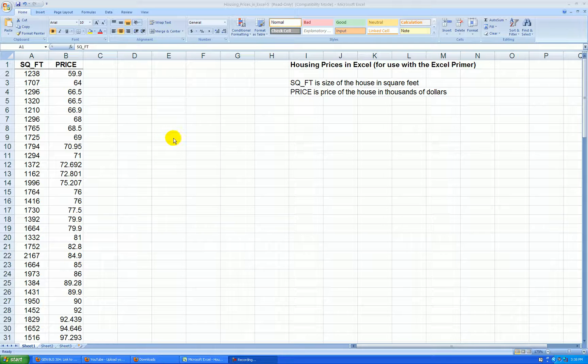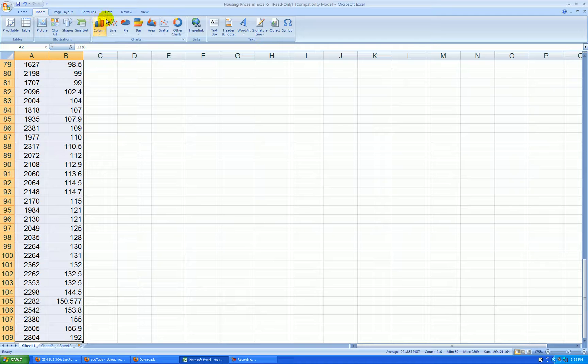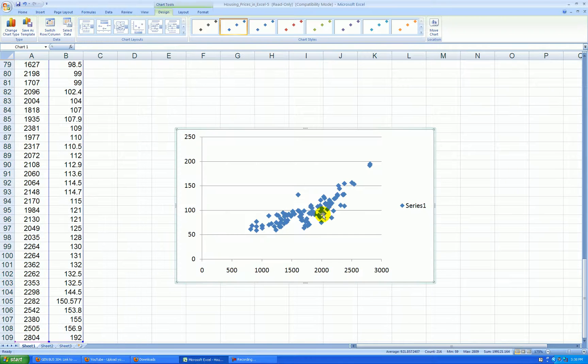I like to start my scatter plots by selecting the X data which should always be to the left of your Y data in an Excel spreadsheet. So I'll highlight my X and Y data, not the labels. I start selecting the data then press shift control down arrow key and I go insert scatter. The first option is what we want.